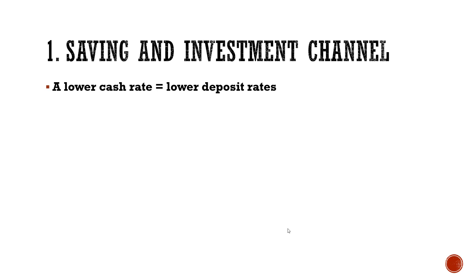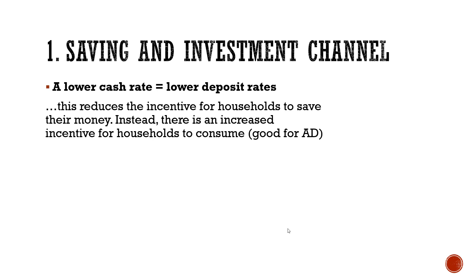The first channel is the saving and investment channel — these are the channels that help changes in the cash rate affect the whole economy. First, if there's a lower cash rate, that means lower deposit rates. So consumers, people, or businesses will get a lower return on their savings. With lower deposit rates, people are more likely to spend. For your notes, just flip the script: a higher cash rate means higher deposit rates, and that will reduce consumption.